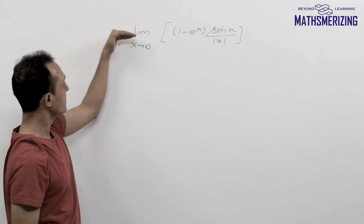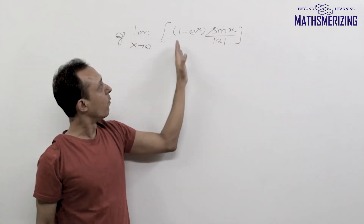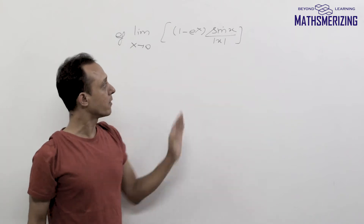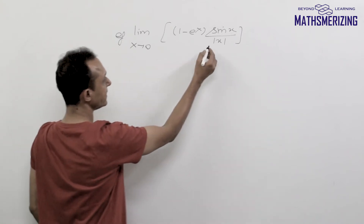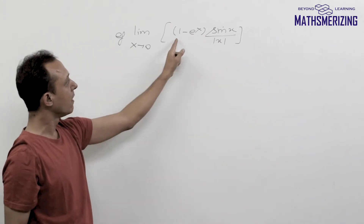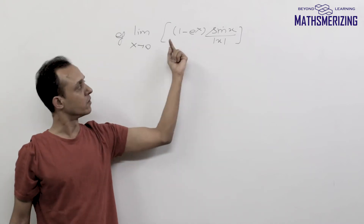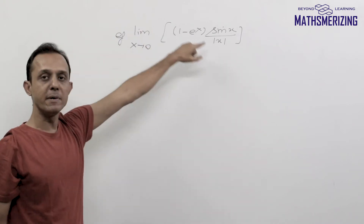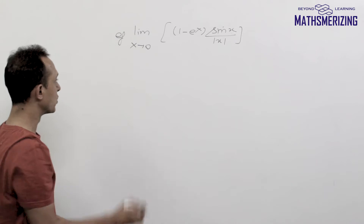The question is: limit x tends to 0 of the greatest integer function of (1 minus e to the power x) times sin x upon mod x. I notice that sin x upon x is 1, and 1 minus e to the power 0 is 0, so the argument is an integer. This means I cannot take this limit inside the greatest integer function directly.